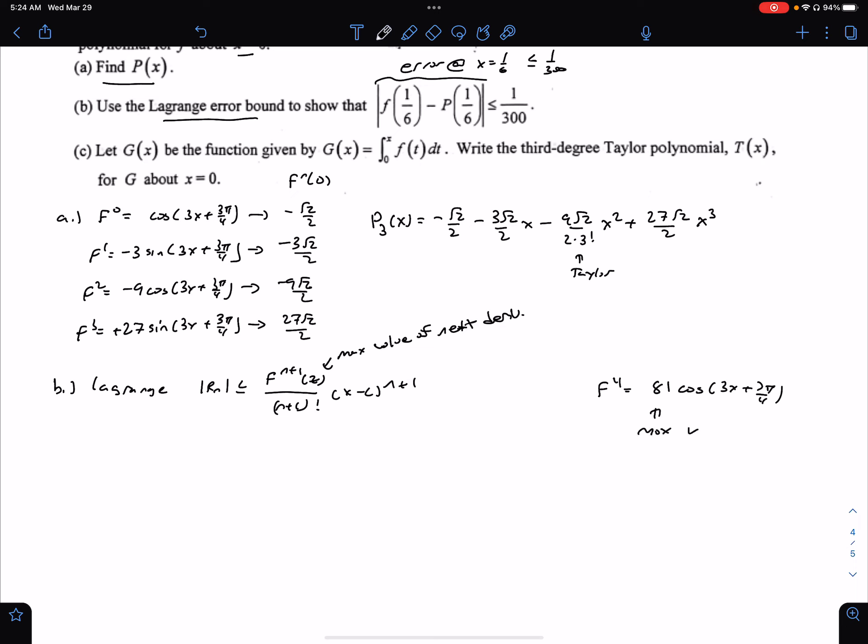Well, what's the maximum value here? Well, cosine can only be 1. The max value for cosine is 1. And we're just taking that 1 times 81, so the maximum value is 81.